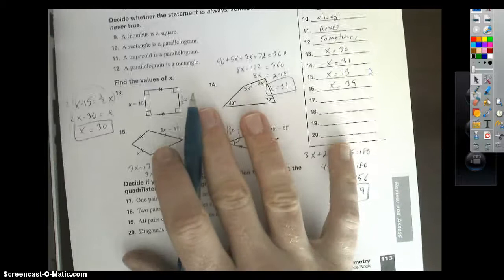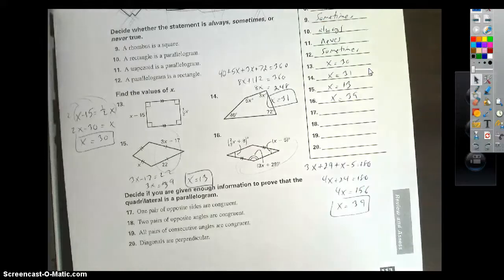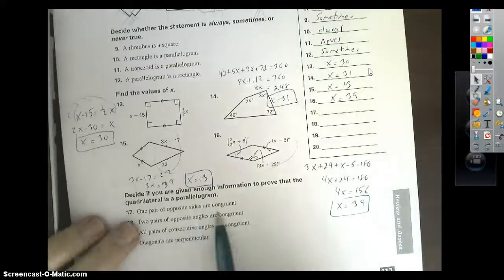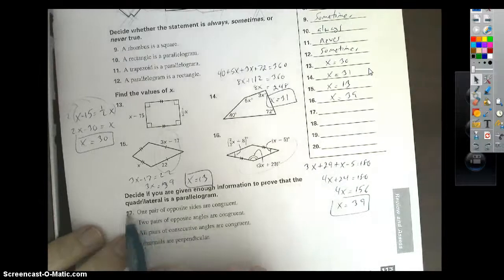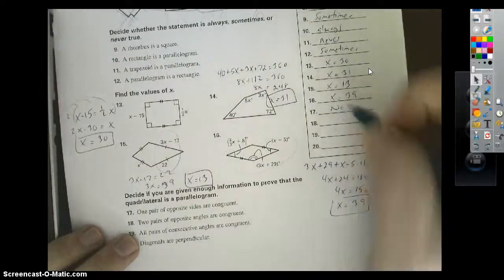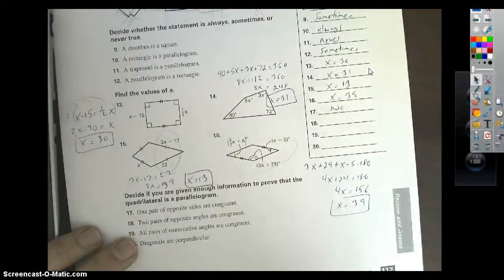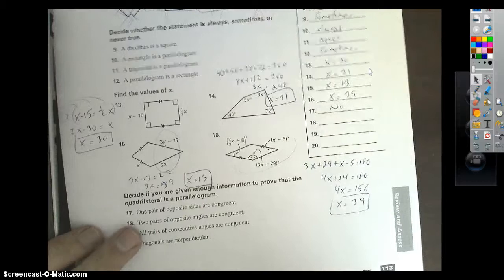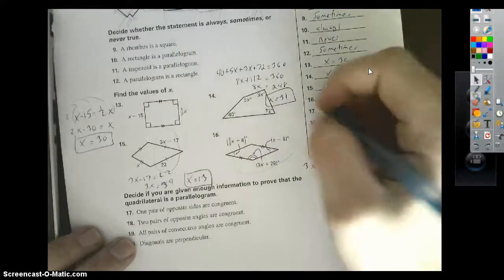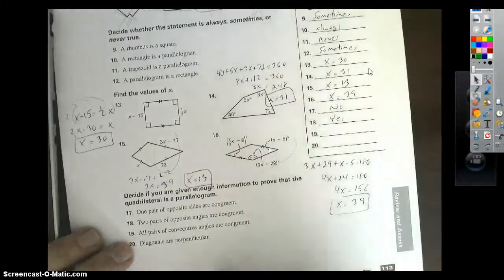Okay, bottom of the page here. Decide if you are given enough information to prove that a quadrilateral is a parallelogram. One pair of opposite sides are congruent. That's going to be a no. You're going to need both pairs of opposite sides congruent, as well as one pair of parallel sides. Number 18, two pairs of opposite angles are congruent. This will work. So we've got what we need there. That's enough to prove a parallelogram.